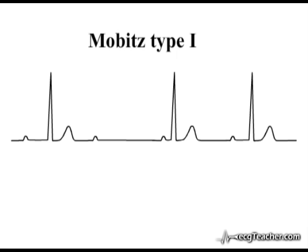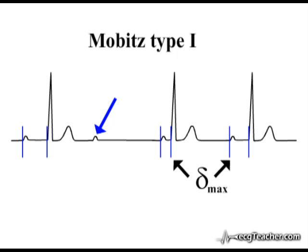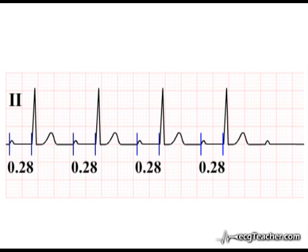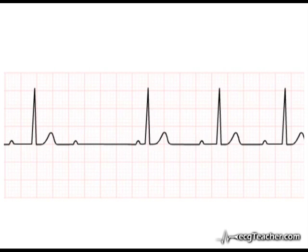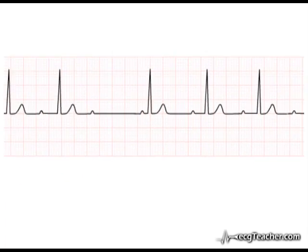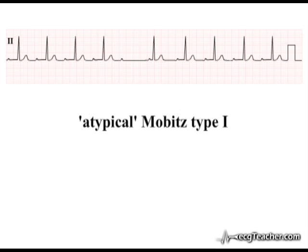In a case of Mobitz type 1, the longest PR interval is seen in the beat immediately preceding the non-conducted P-wave, while the shortest PR interval is observed in the beat immediately following the non-conducted P-wave. Also, the largest change in the PR interval is observed between the first and second beats following the non-conducted P-wave. Despite the apparent uniformity of the PR intervals within the main body of the group, analysis of the PR intervals around the time of the non-conducted P-wave indicates that this is a Mobitz type 1 second degree AV block. This situation is termed atypical Mobitz type 1.